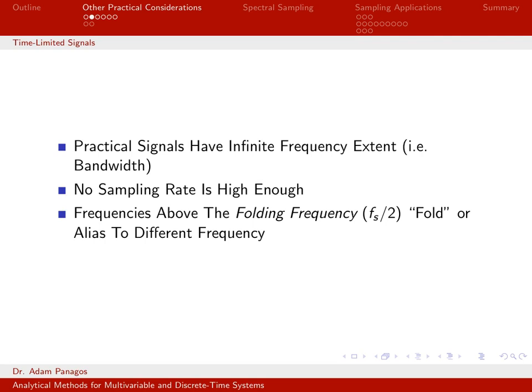The problem is that everything above my sampling frequency divided by two is going to fold over — what's called aliasing — to a different frequency. So let's take a look at what happens when I sample a signal that has a large frequency extent at something less than that max frequency.